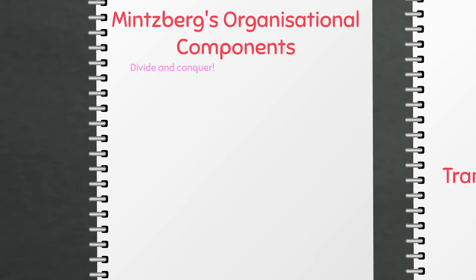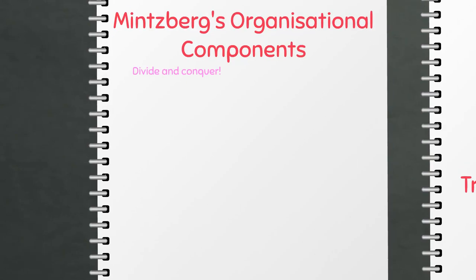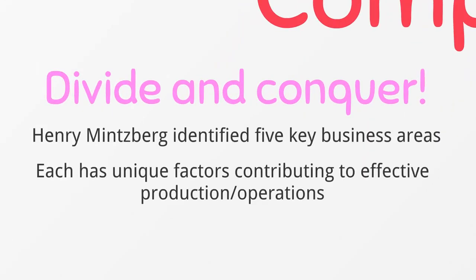Whether you're studying for E1 or whether you're just interested in business, this video is for you. 'Divide and conquer' is normally something you say about your enemies, but we're going to apply this phrase to the idea of structuring organizations, because if a business can successfully divide yet still successfully coordinate its activities, it's going to conquer its strategy. This model, created by Henry Minceberg, identifies five key areas of a business.